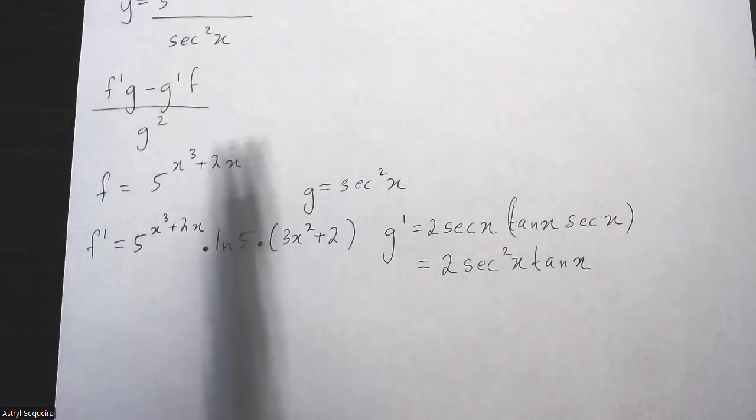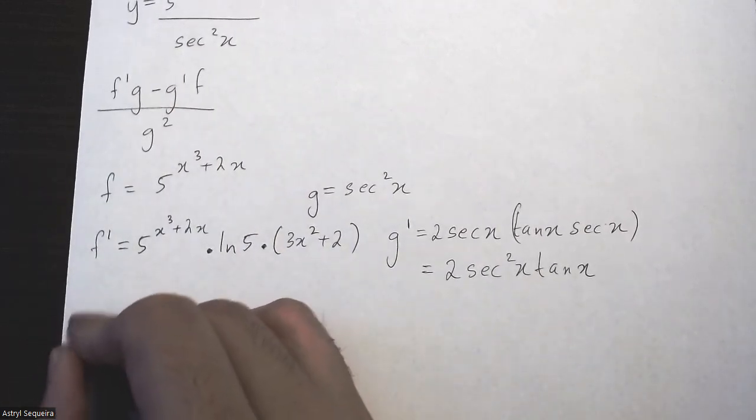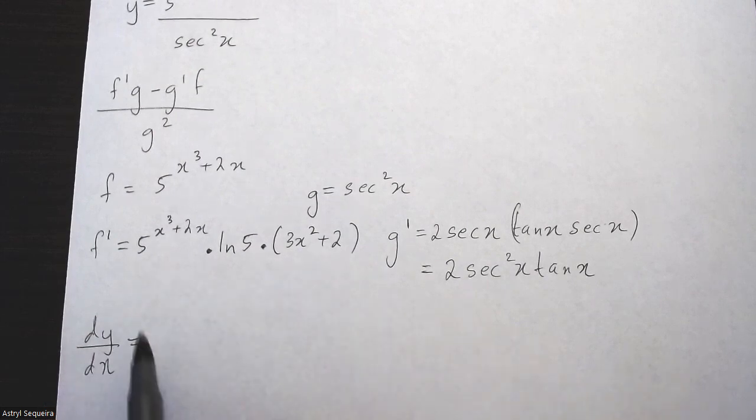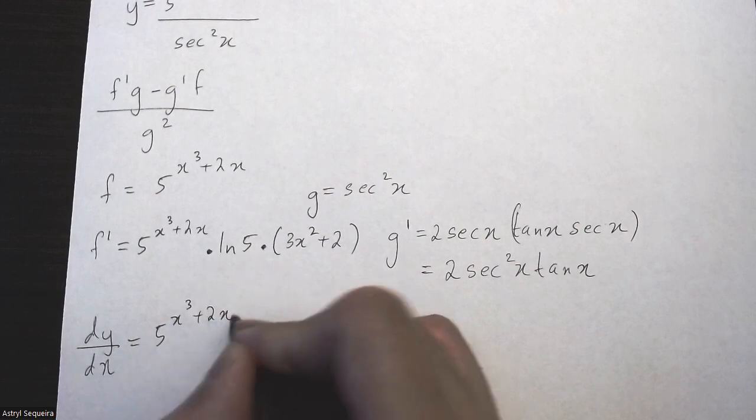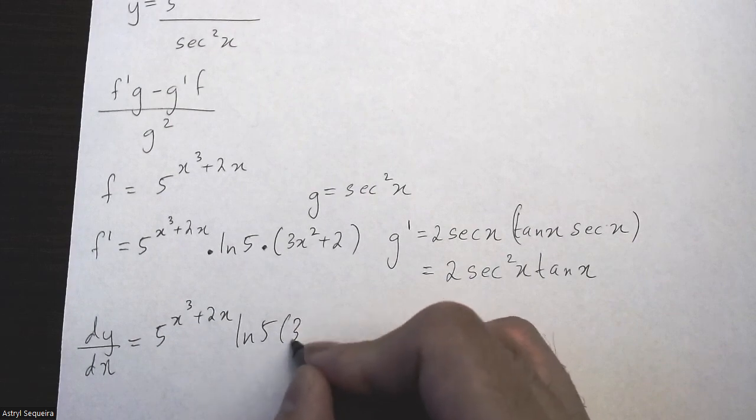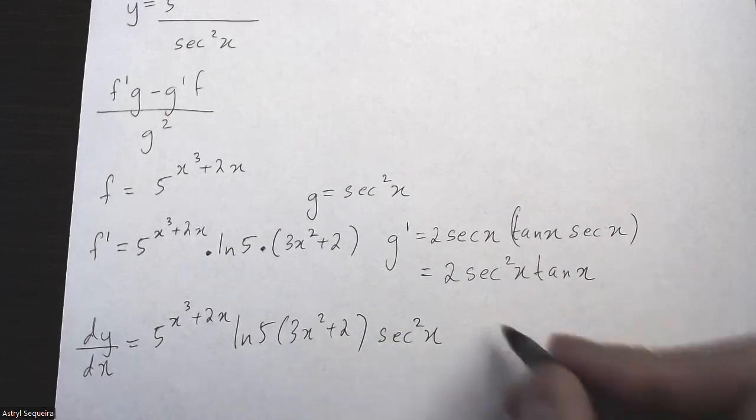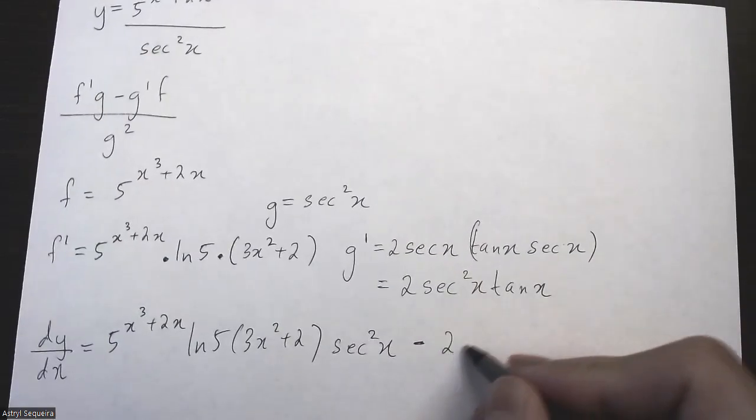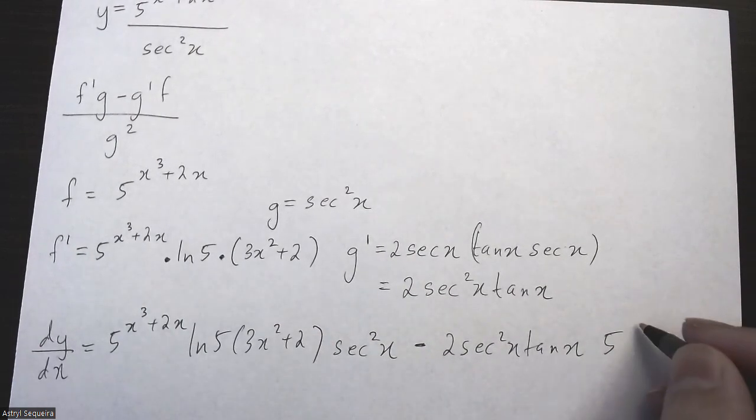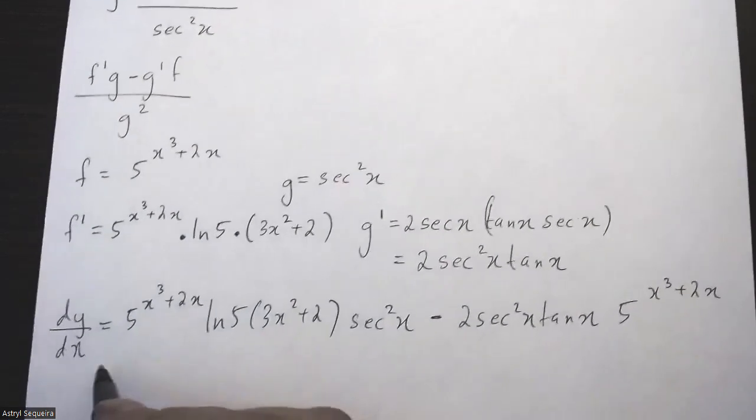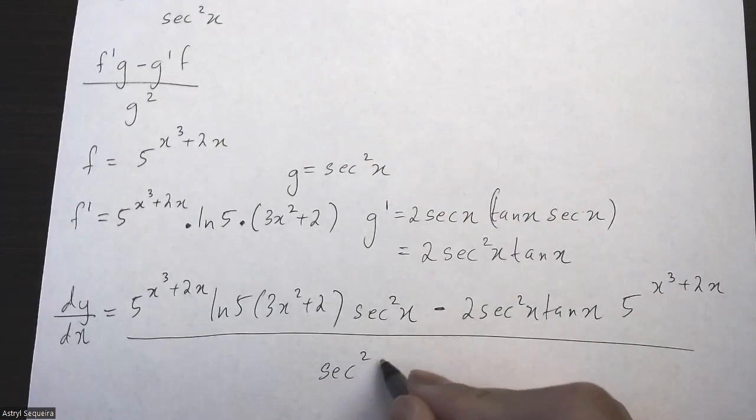Now we substitute all of these into our quotient rule. So dy/dx equals f prime times g, which is 5 to the x cubed plus 2x times ln 5 times (3x squared plus 2) times sec squared x, minus g prime, which is 2 sec squared x tan x, times f, which is 5 to the x cubed plus 2x, all divided by g squared, which is sec squared x.